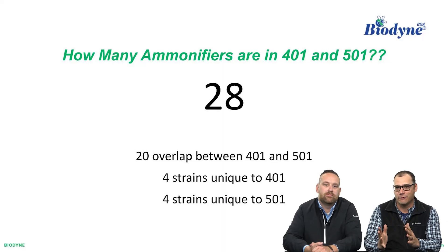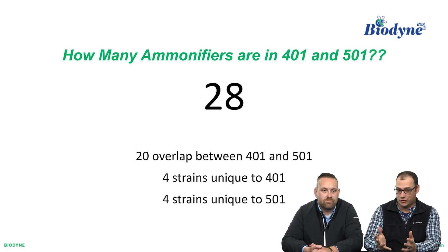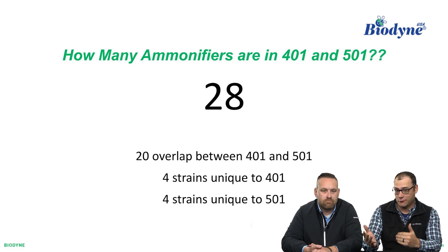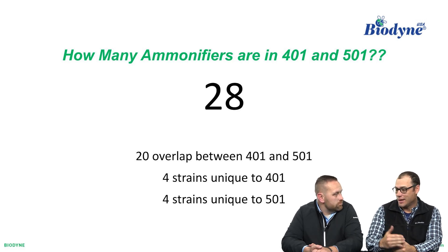The holy grail of agriculture to me is nitrogen — that's the one thing that everybody wants to try to master and it's slippery. The more we learn, the less we know. What I love about these products: how many ammonifiers are in 401 and 501? We have 28 strains of ammonifying bacteria between the two products. We have 20 that overlap and are in both. Each product has four unique strains as well.